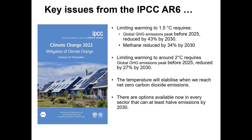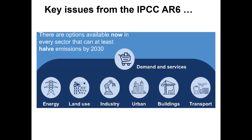There are options available now in every sector that can at least halve emissions by 2030. These options are available in energy, land use, industry, urban areas, buildings, and transport. We can do something to reduce emissions in those key major emitting sectors by 2030.